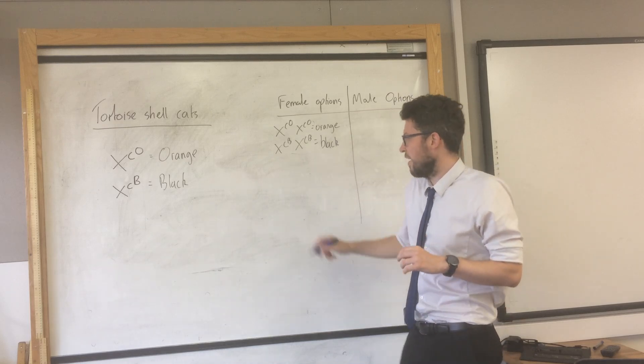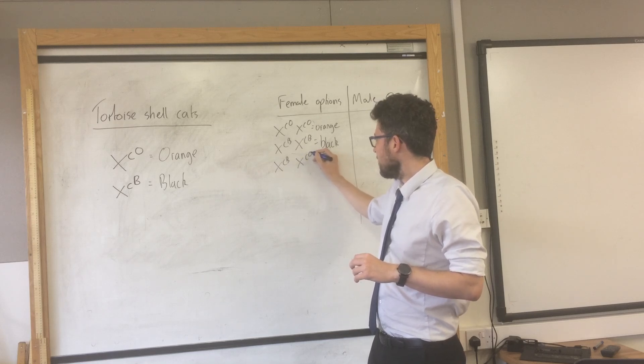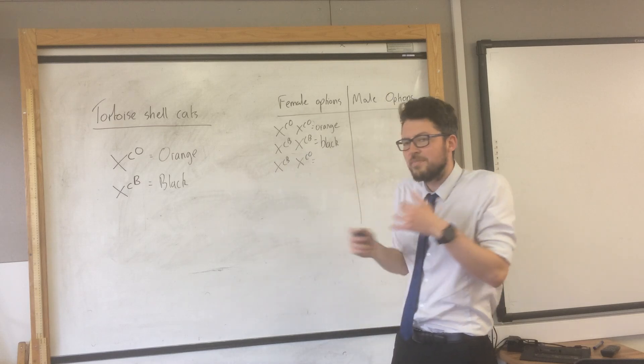But they could also inherit XC-B and XC-O. And this is what makes them tortoise shell, kind of multicoloured.